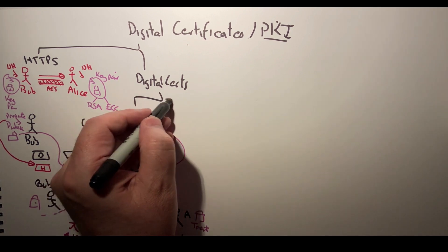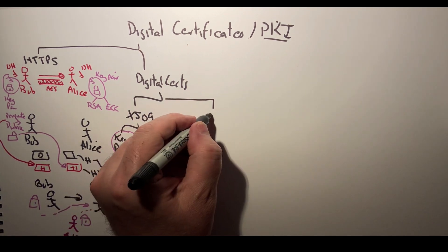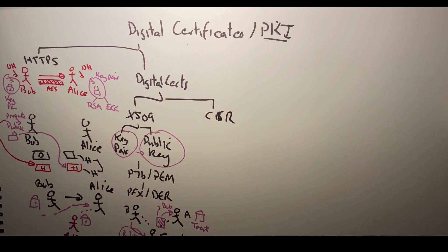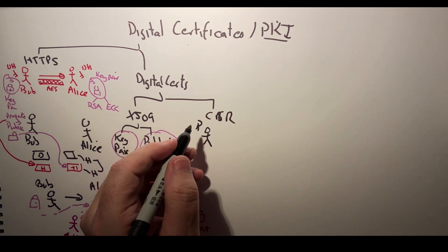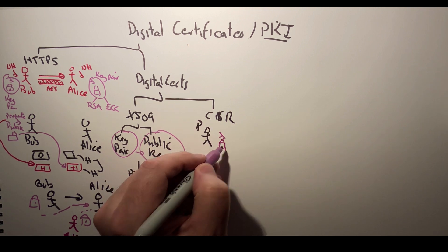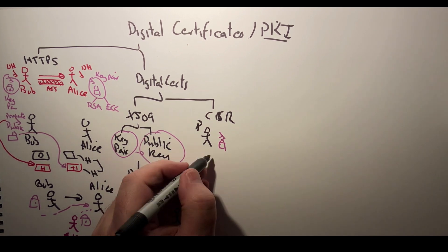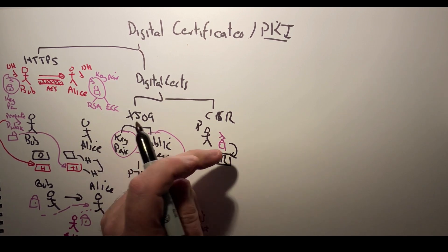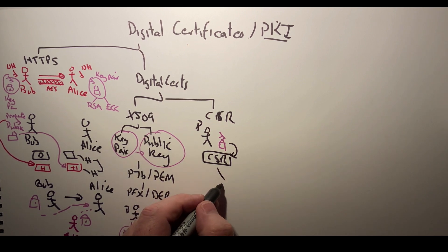How do we get this certificate from Trent back to Bob for Bob to distribute to Alice? We do that with a certificate signing request. Bob initially creates his key pair, and then creates a certificate signing request. The CSR takes his public key and gets it ready to send to Trent. Trent then receives this.